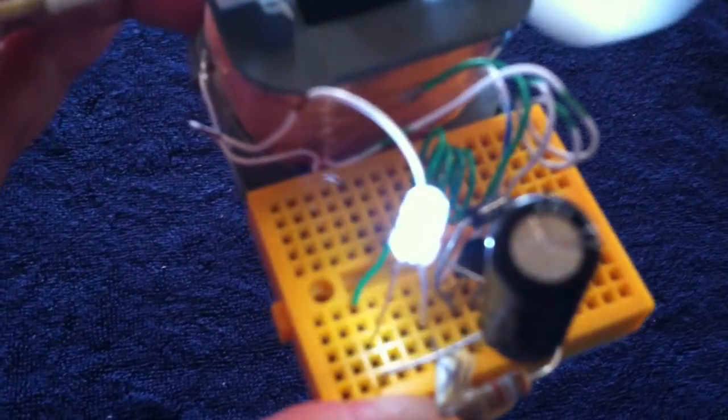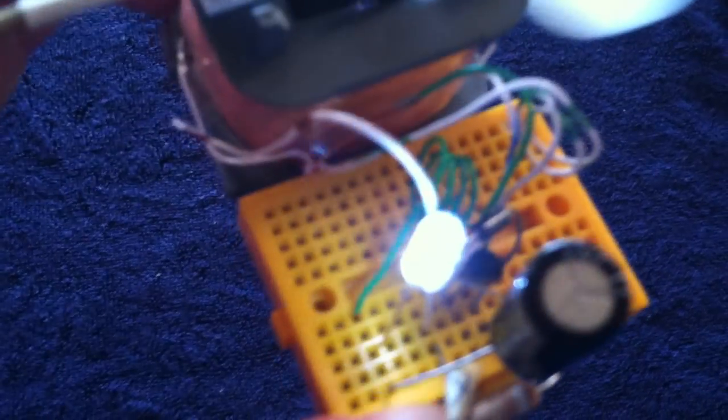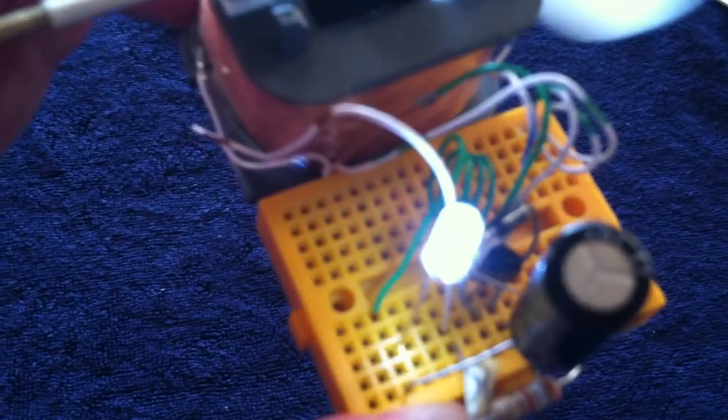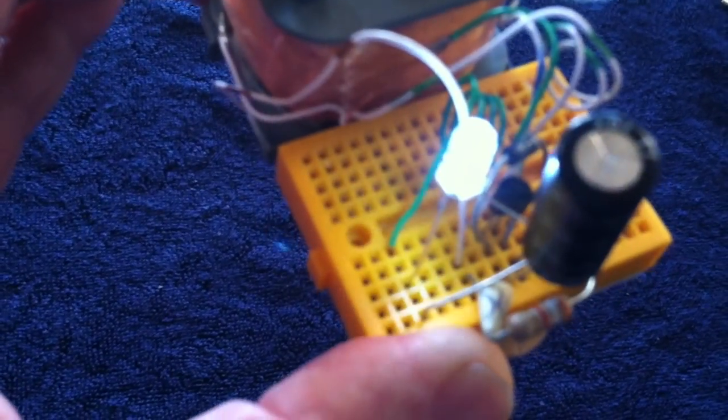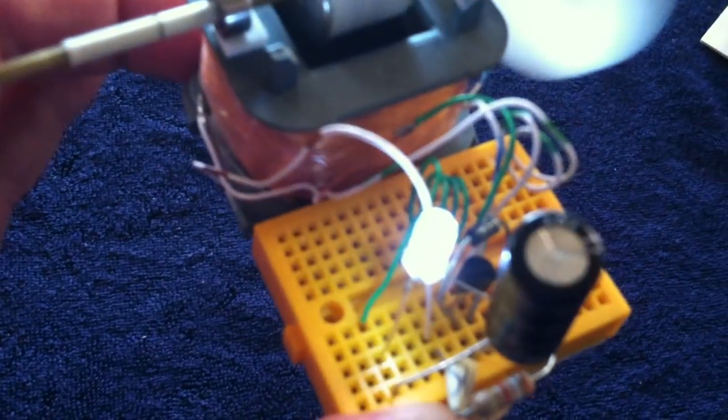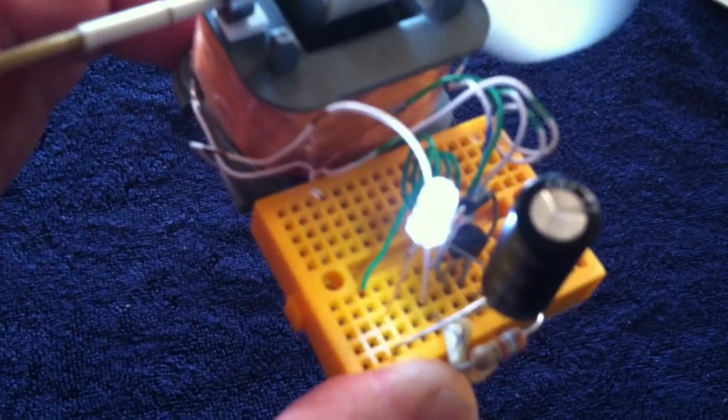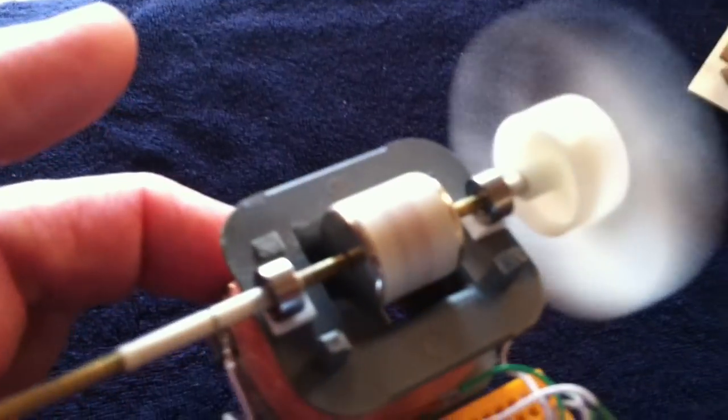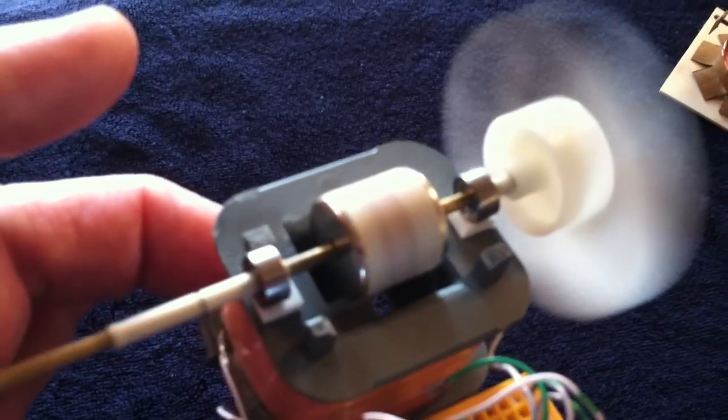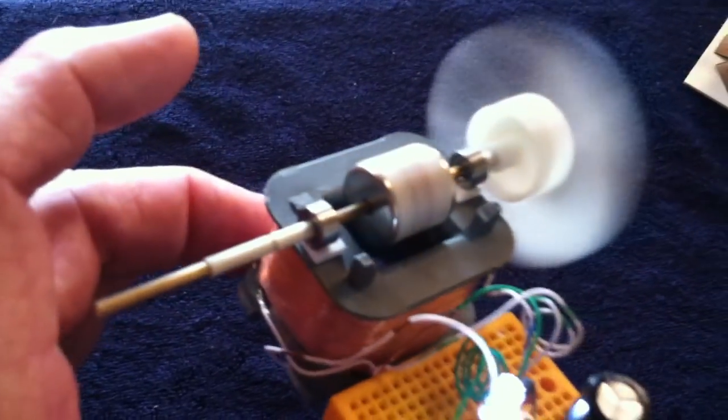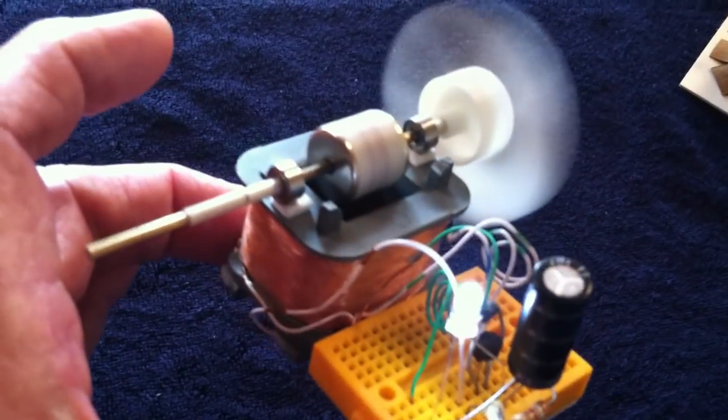The circuit is a Bedini SSG circuit with the diode that normally goes to the charge battery going back to the plus rail on the circuit, but look up the Bedini SSG circuit, and that's what that is. The only difference is it's not a monopole, it's a two-pole magnet, and I'm sure John made some of these things too if you look at his circuits.